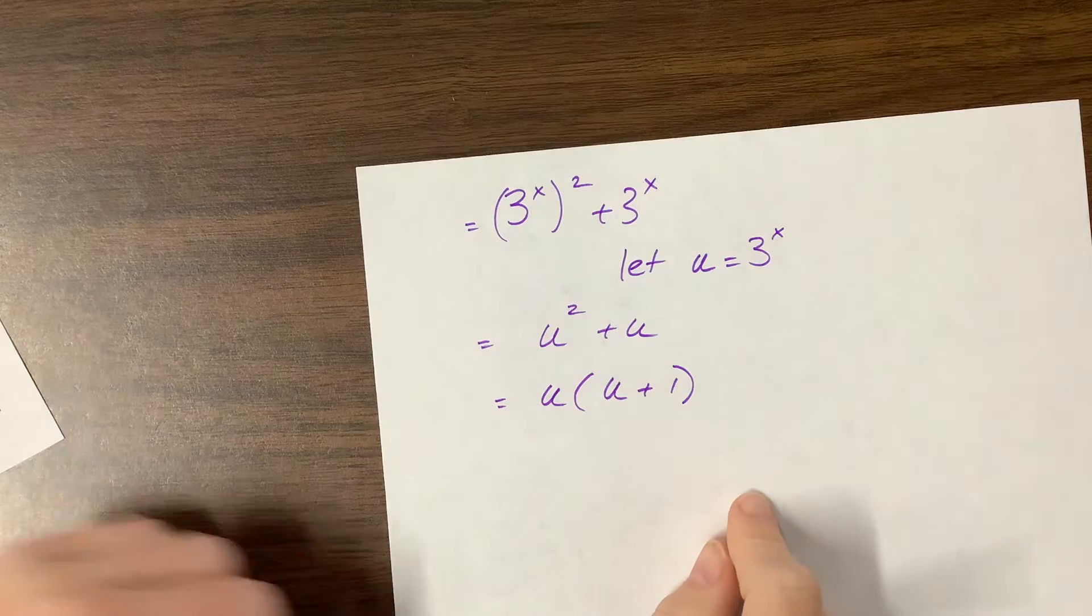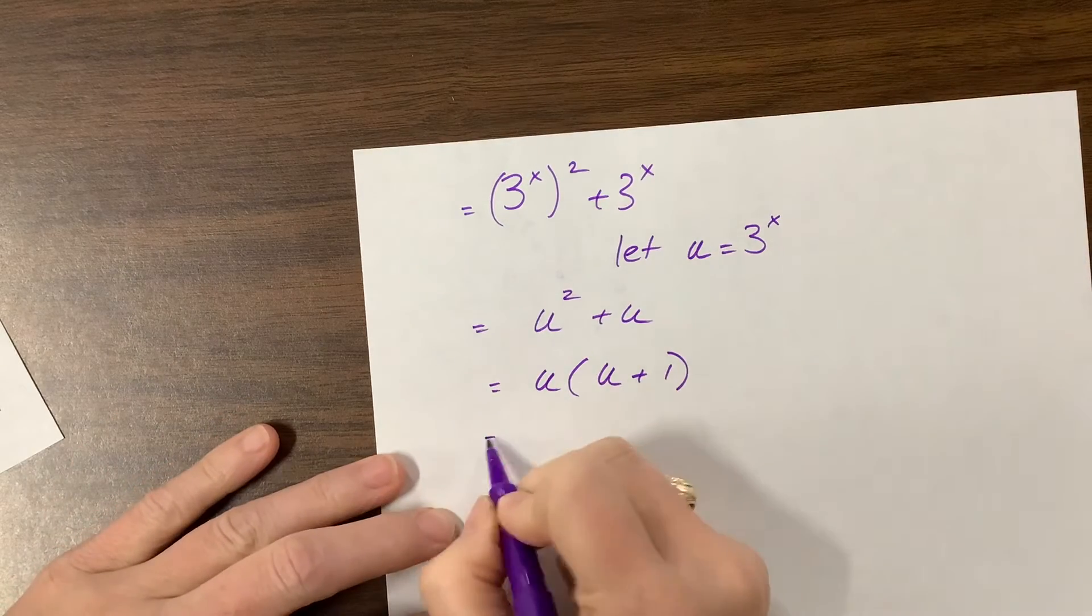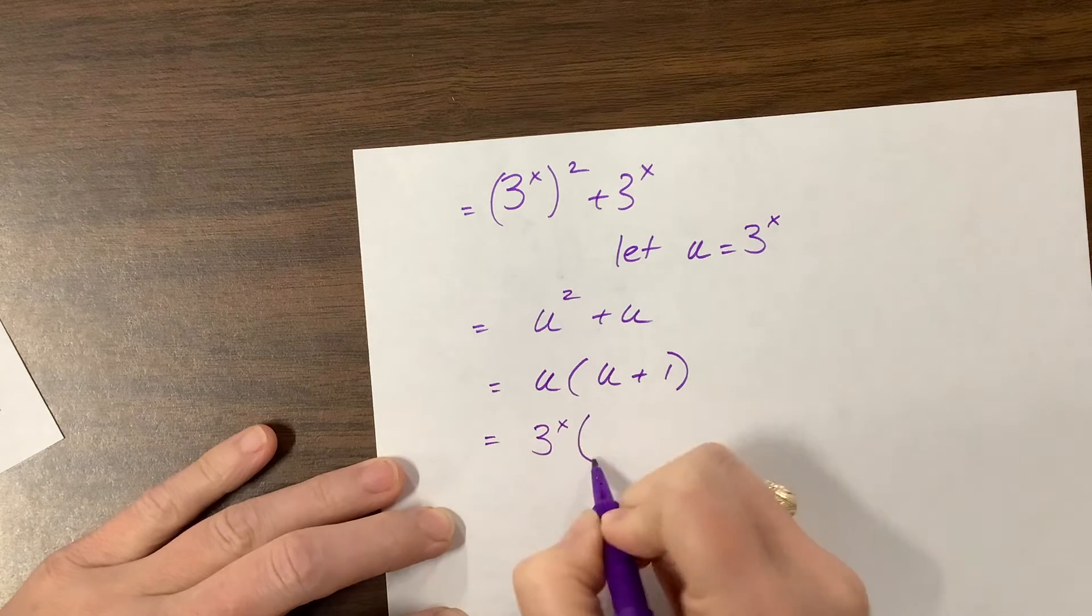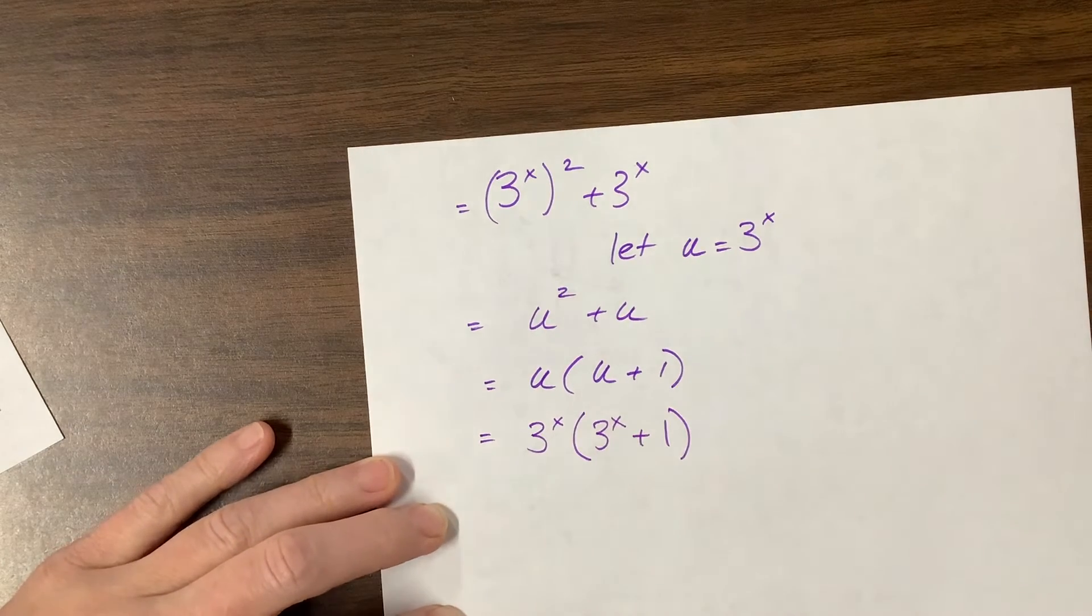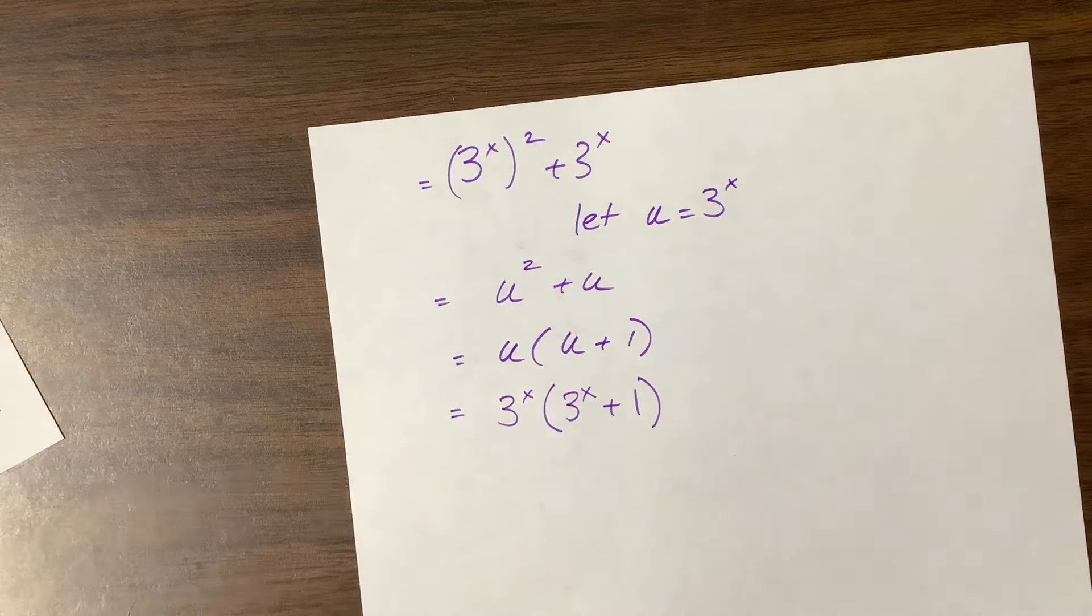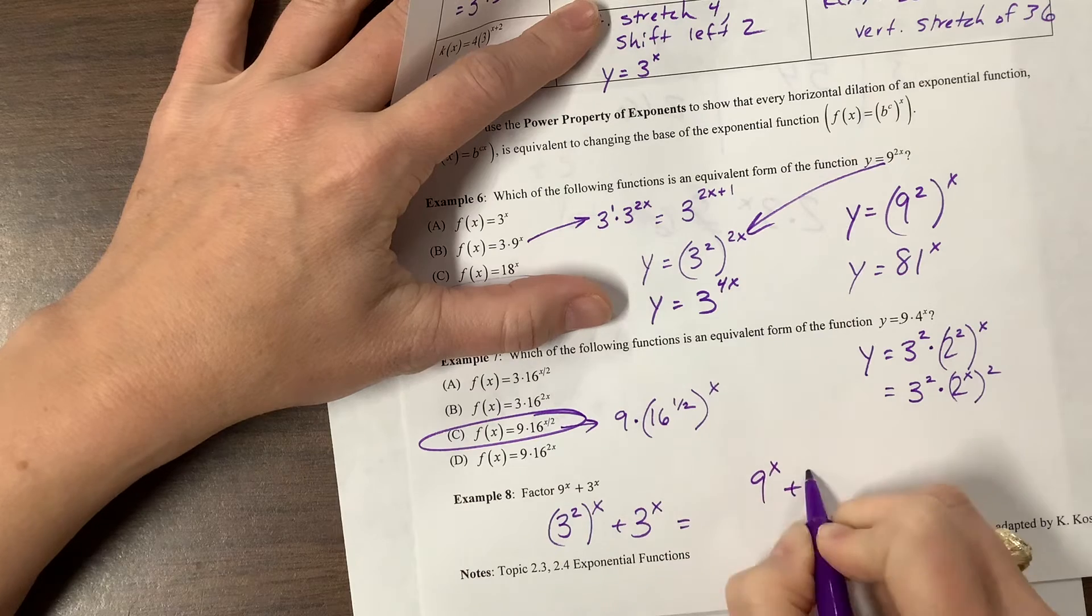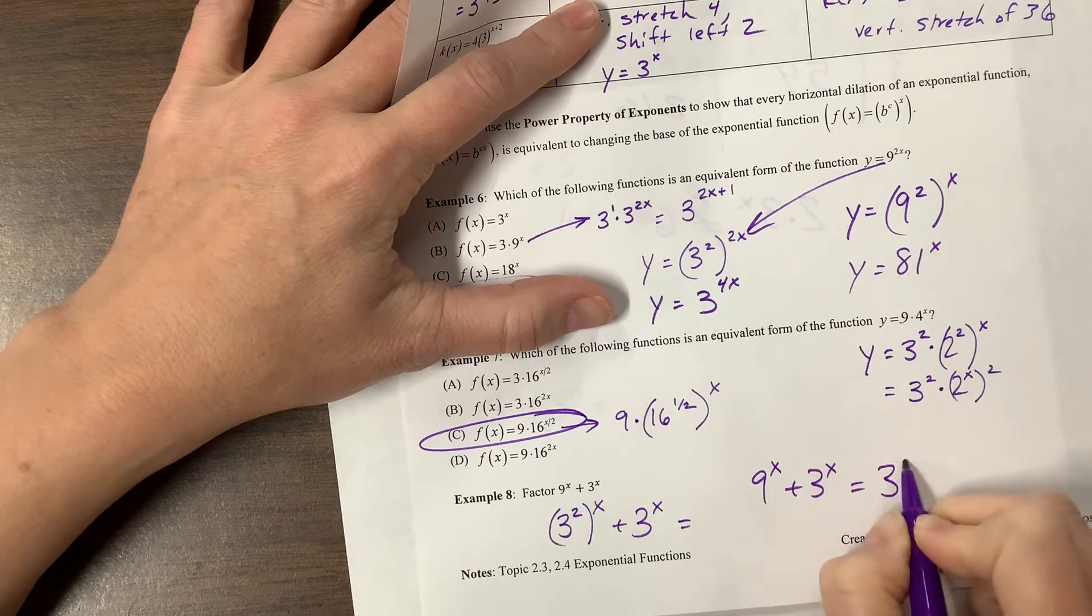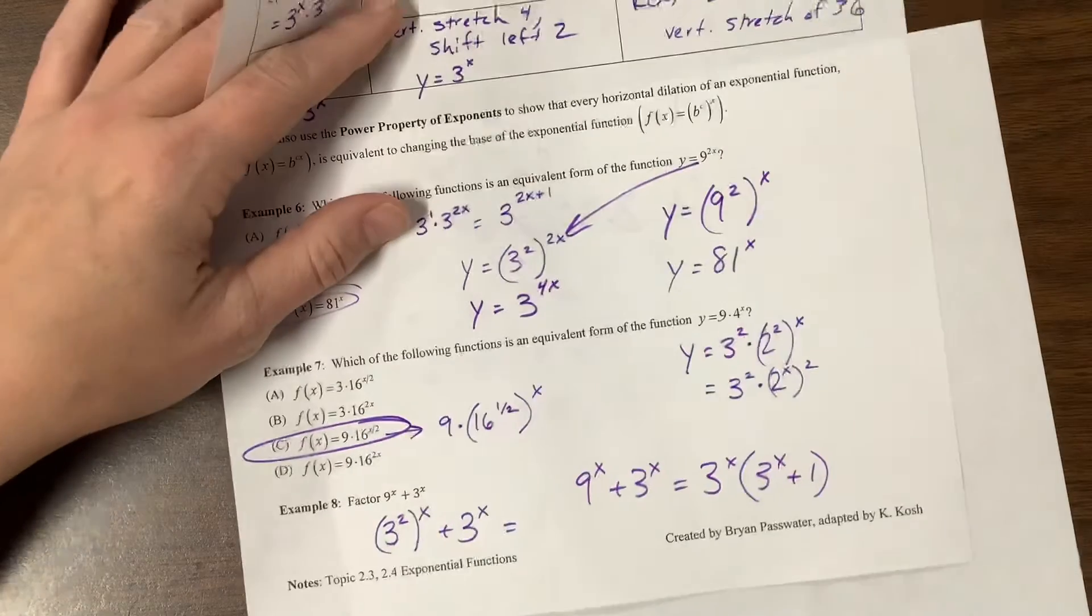But we can't stop here, because they didn't tell us, they didn't write the problem in terms of u. They wrote it in terms of me. No, I'm just kidding. They wrote it in terms of x. So we have to come back here and say this is 3^x times 3^x + 1. Okay, and that's factored. They didn't set this equal to anything. So when they say factor, so 9^x + 3^x would be equal to 3^x times 3^x + 1. Oh, sorry.